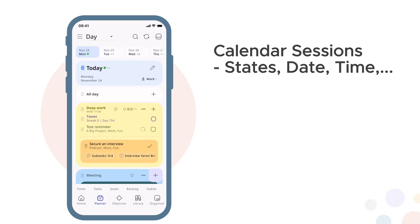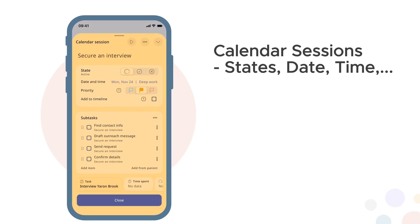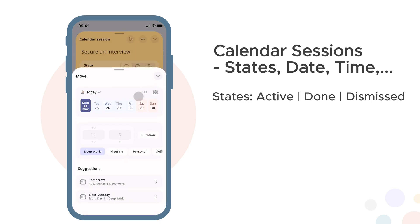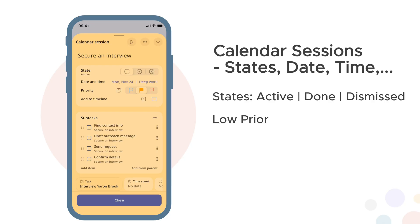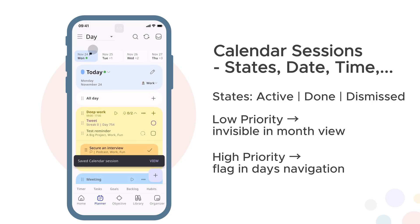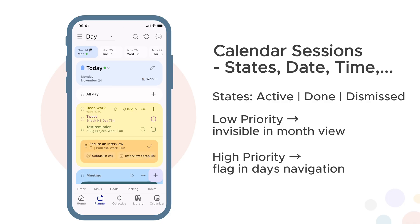Calendar sessions have a state: active means it's current or in progress, done means you completed it, dismissed means you skipped or cancelled it. Select the segment to change it. Date and time are straightforward — update them as your schedule changes. Priority affects visibility: low priority items are invisible in month view, they exist but don't clutter your calendar overview. High priority items get a flag indicator in the day's navigation at the top of your planner — when you're scanning your week, those flags catch your attention for important items you shouldn't miss.